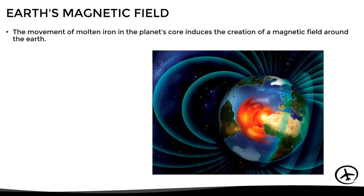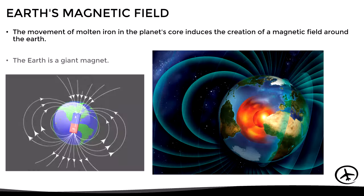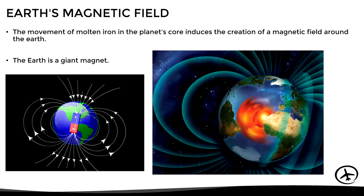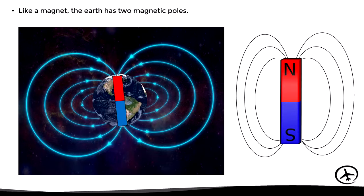In other words, we could say that the earth is a giant magnet, and just like a magnet, the earth has two magnetic poles, north and south. This way, the magnetic field lines leave the planet at the south pole and re-enter at the north pole.